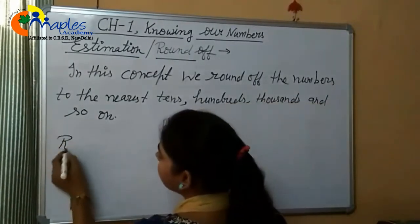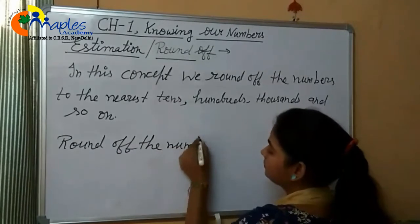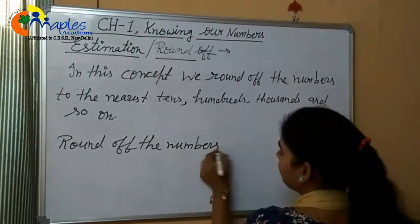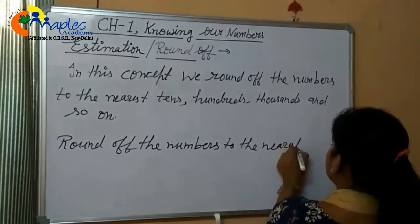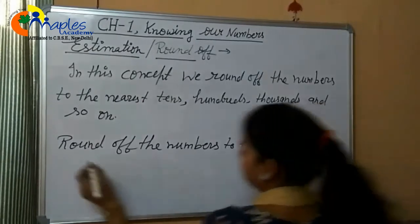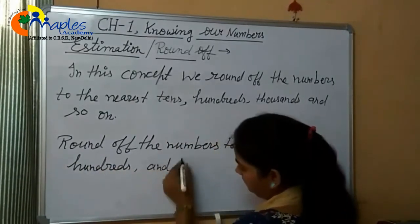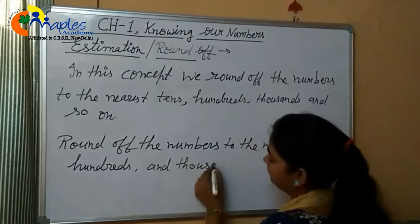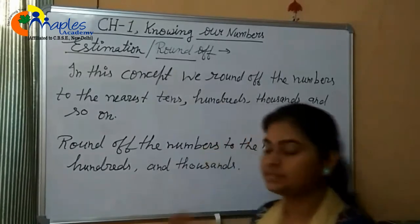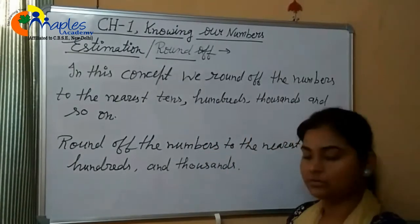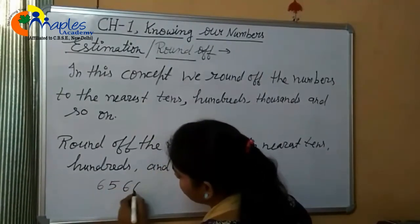We round off numbers to the nearest tens, hundreds, and thousands. So we take a number — the number is 65,663.